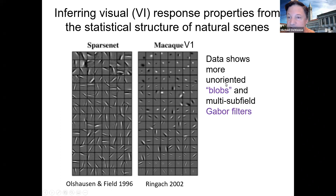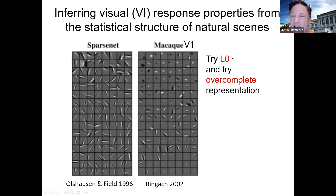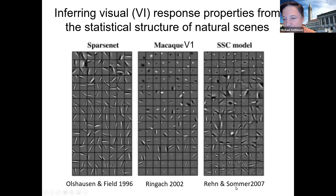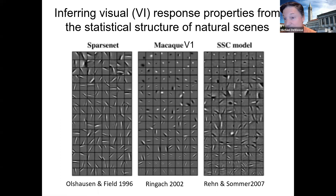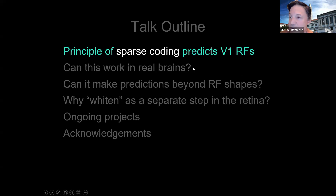There are some deviations — you get point-like things instead of just edges. That can be accounted for by using L0 instead of L1 norm minimization, minimizing the number of non-zero coefficients. But the real difference comes from using an over-complete rather than complete representation. Here's a more recent effort by Bruno Olshausen and Fritz Sommer — Martin Ren's algorithm can handle L0 minimization and other things, giving a much better fit to the data. Sparse coding tells us something about what's going on and the visual system uses this to understand the structure of natural scenes.